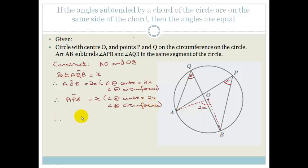And therefore that means that angle AQB is equal to angle APB. And so we have proven if two angles are at the circumference and they're subtended by the same arc, then they are equal.